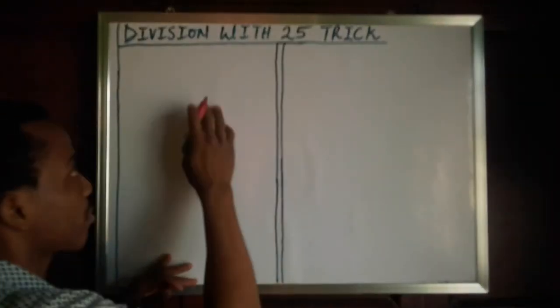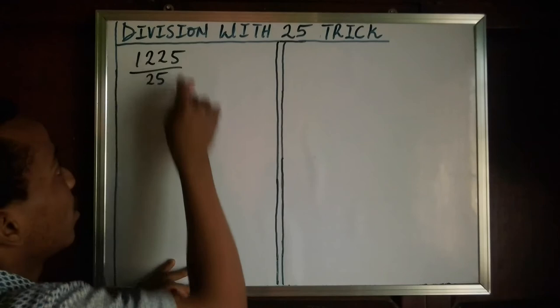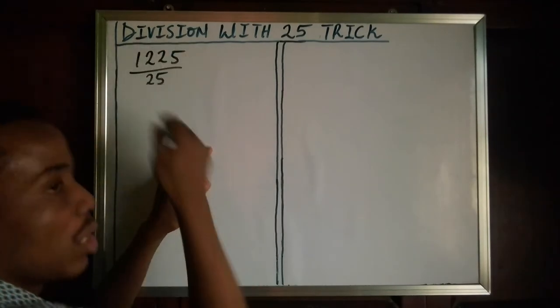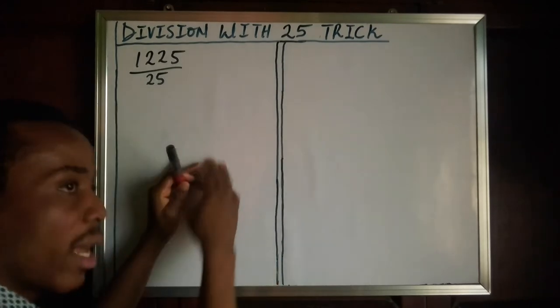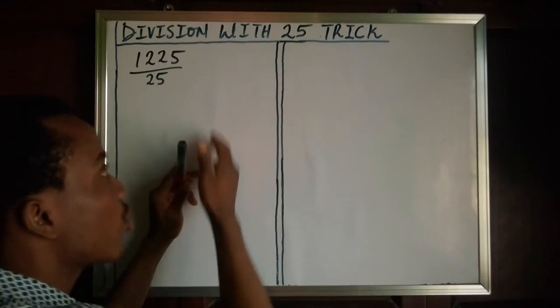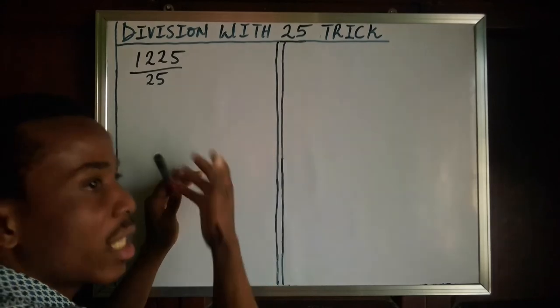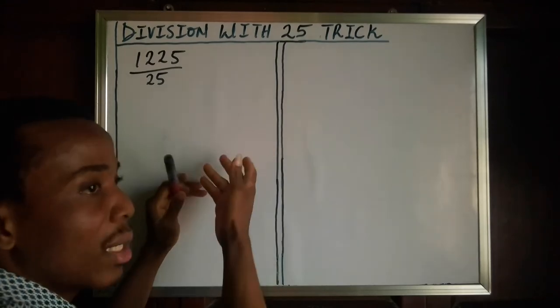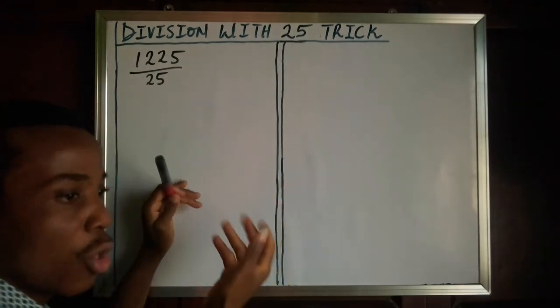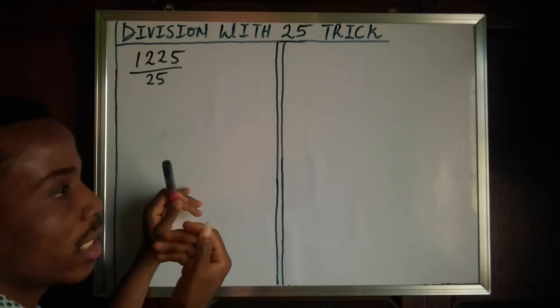For instance, if you're given 1225 divided by 25, will you start saying 25 into 122? This is kind of a waste of time. But if you're patient enough, you can still divide. Or in a situation where you're in an exam hall and you're trying to beat time, or maybe you just want to do this quickly, dividing with 25 is kind of slow. It slows your speed. Now, in a situation like that, there is a way you can be faster in dividing.